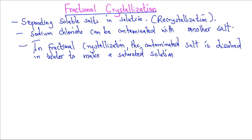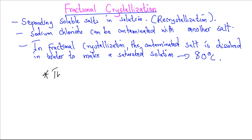The solution is heated to approximately 80 degrees Celsius, at which point crystals of the desired substance form, leaving the impurities in the solution. These impurities remain in the solution because, firstly, they are more soluble at higher temperatures.